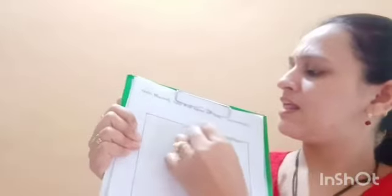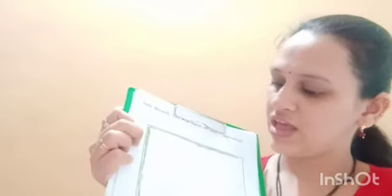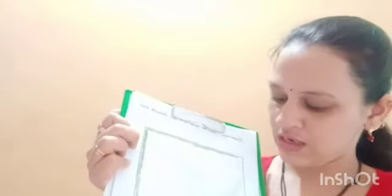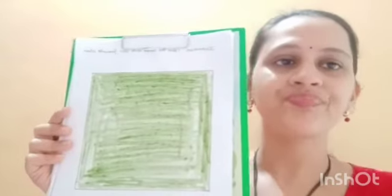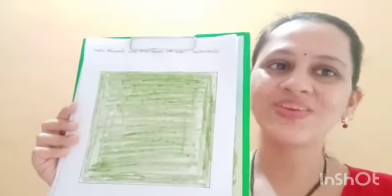See here, we have to color like this in square shape. Okay, yes, we have to color like this in square shape. We have to color like this. This is a square shape. This is a square shape. Thank you.